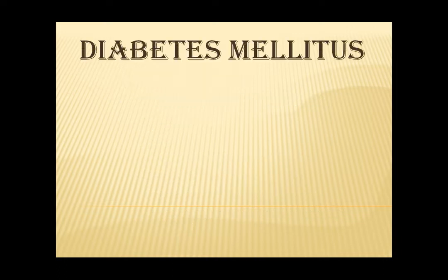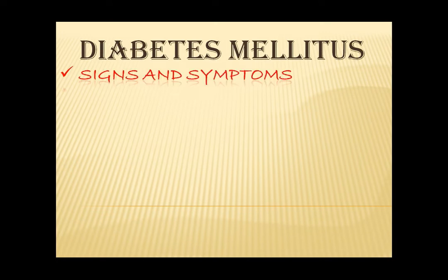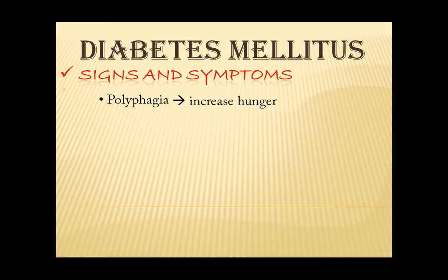Let's now proceed to the signs and symptoms. The most common are the three P's: polyphagia, polyuria, and polydipsia. First, polyphagia means there is an increased hunger and the patient tends to eat more. This occurs because the food that we take that is being converted to glucose was not able to enter the cell due to a problem with insulin. So the glucose will stay in the bloodstream and cell starvation occurs. So the patient will feel that he or she needs to eat more which will result to accumulation of glucose in the blood.